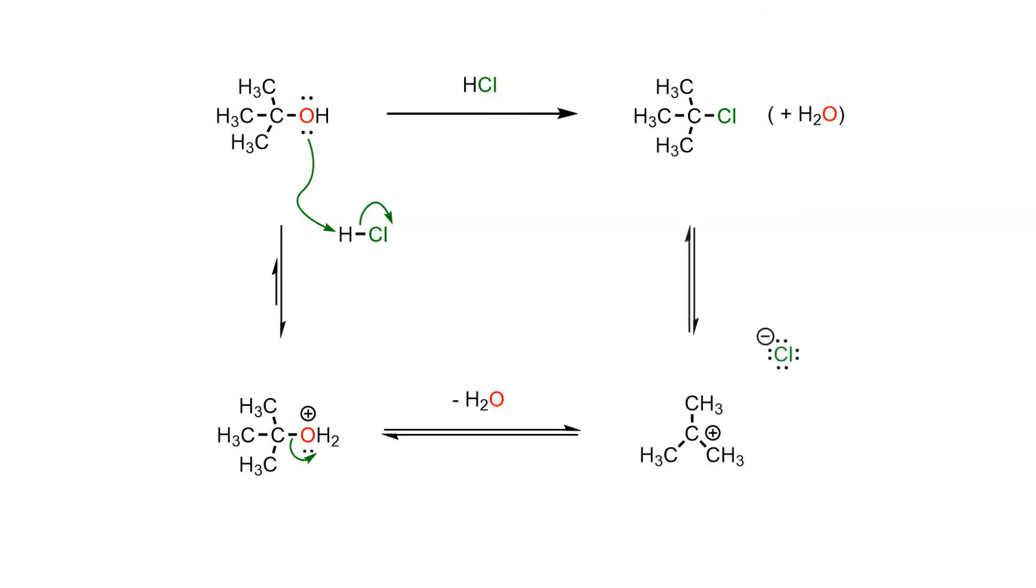In the last step, the halide nucleophile attacks the electrophilic carbocation, which is flat, and produces the stable 8-electron alkyl halide product in a fast exothermic step.